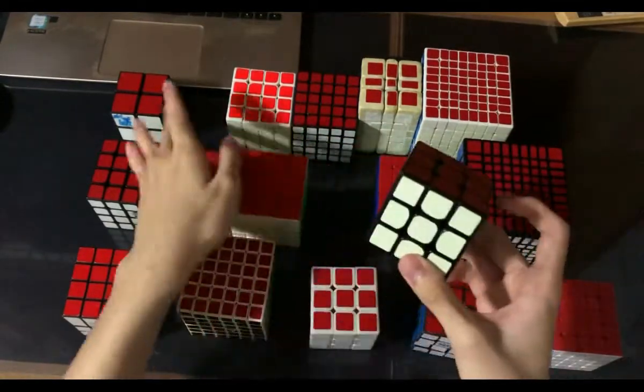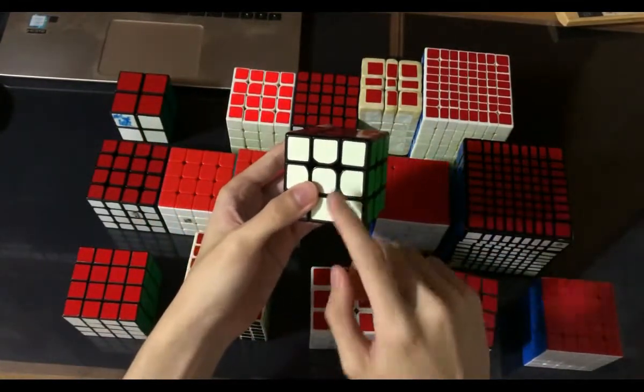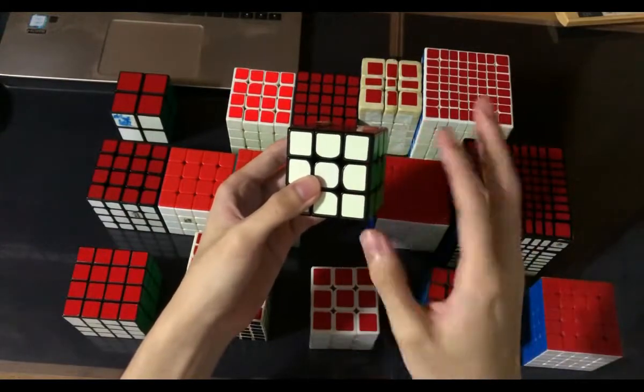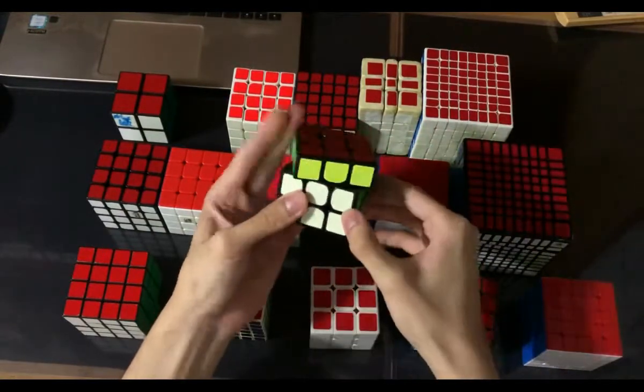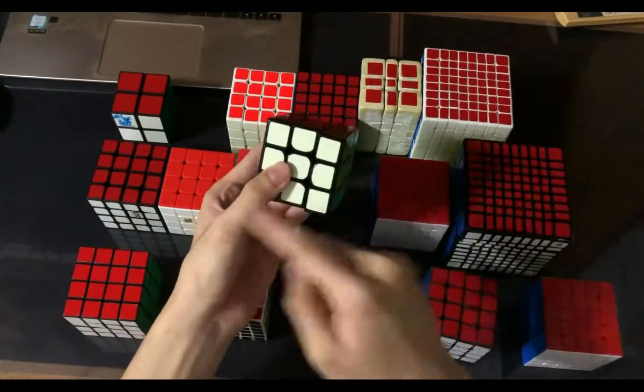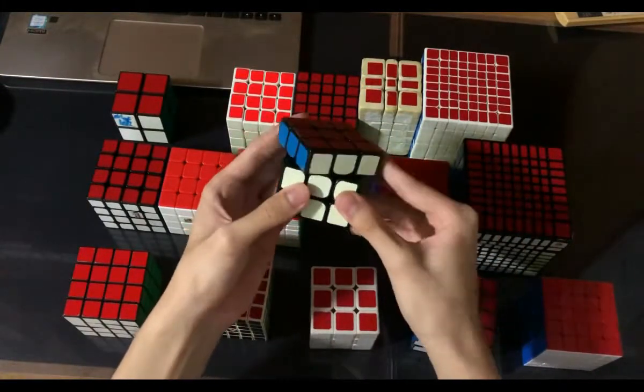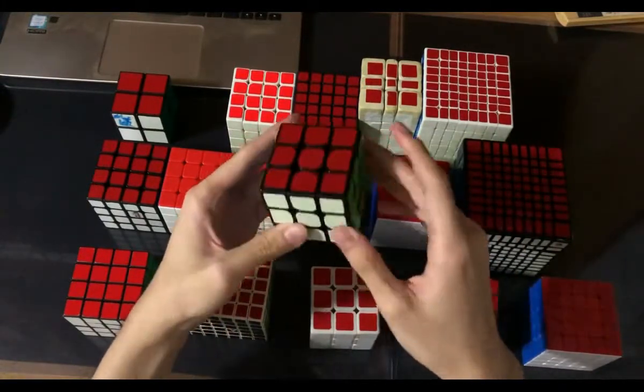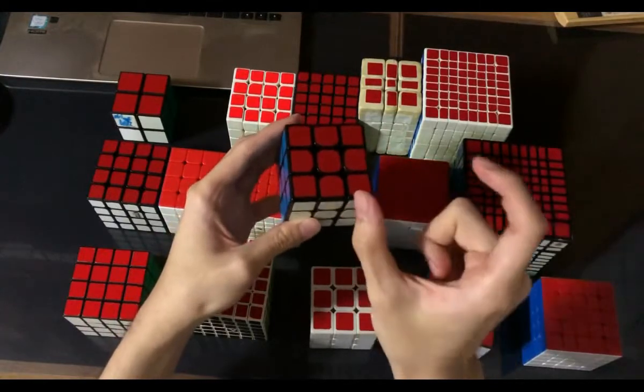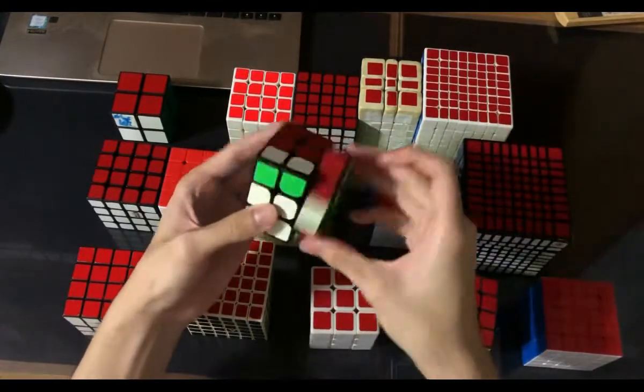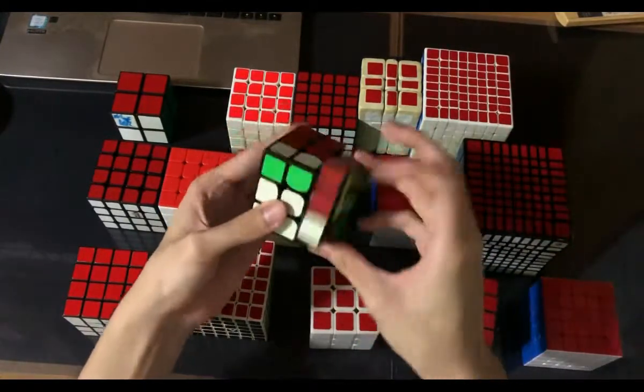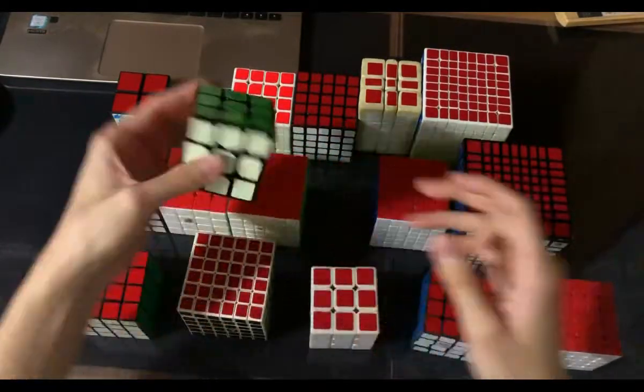This one came out in 2016, sometime after the Weilong GTS1 hit the market. It felt like an in-between of the ESL and the Weilong GTS1, which was really good for that time. I would say this is actually the best budget cube in August 2016 around that period. It actually served as my main for some time.